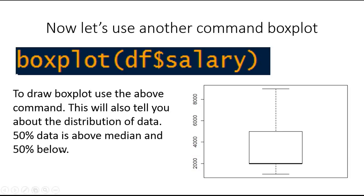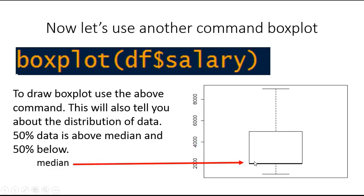It divides the data into four quartiles. Each of the quartiles contains 25 percent of the data and there is a median line. This is the median line in this boxplot. 50 percent of the data lies above this line and 50 percent of data lies below this line.